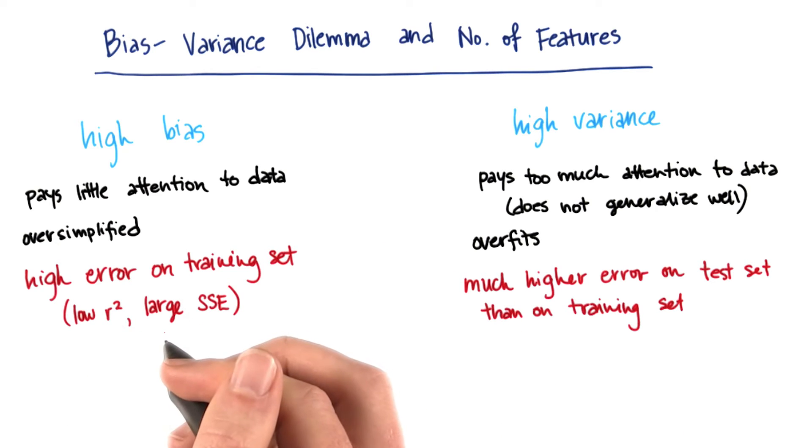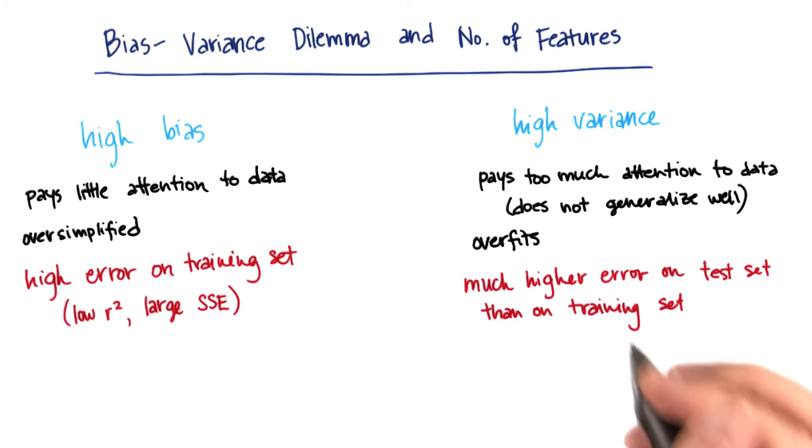High variance, on the other hand, might have a very good fit to the training data but a bad fit to the test data because it's not generalizing very well.